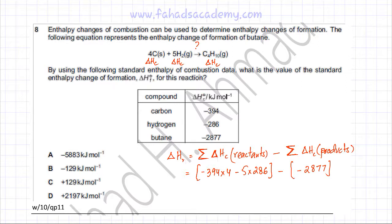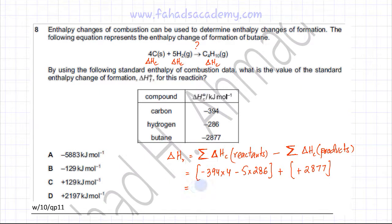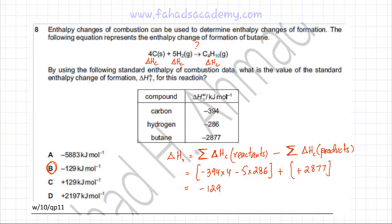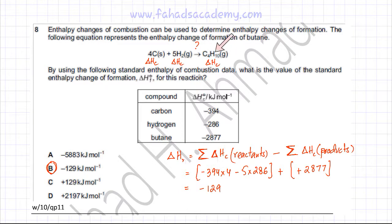Remember to put brackets and be very careful with the signs of the enthalpy changes. There is only one enthalpy change whose sign switches, because two minuses cancel each other out. Solving this on a calculator gives -129 kJ/mol, which is option B. To summarise: knowing all the enthalpies of combustion of reactants and products, we used the formula — enthalpies of combustion of reactants minus enthalpies of combustion of products — giving the enthalpy for the reaction 4C + 5H₂ → C₄H₁₀, and the answer is option B.